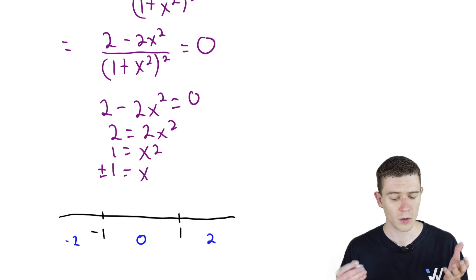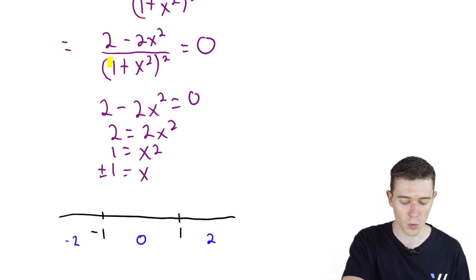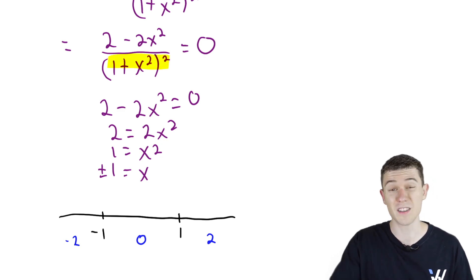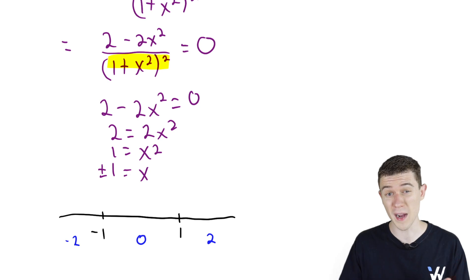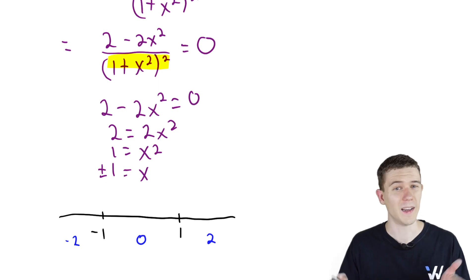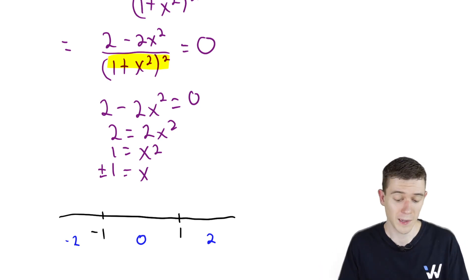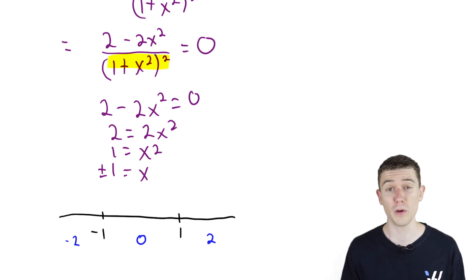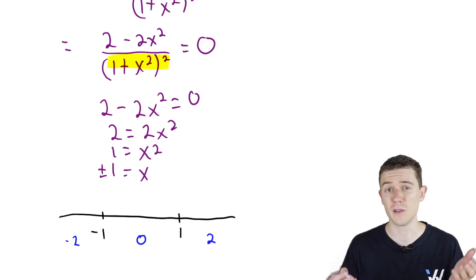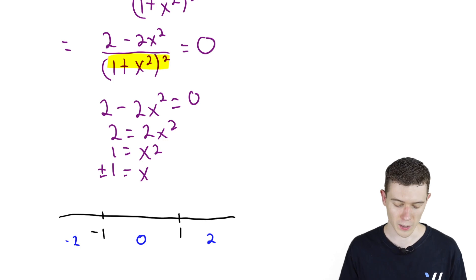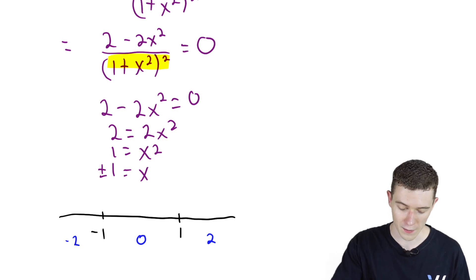Remember, 1 plus x squared all squared is always positive, so since we only care whether our second derivative is positive or negative, this part won't affect our calculation. If we just plug our test values into the numerator, that will be good enough.